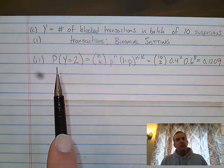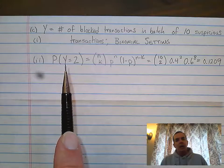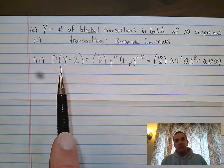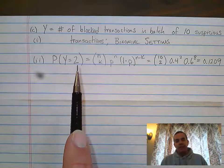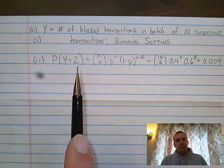Now, to write this down, somehow you need to communicate that you're looking at a probability of this random variable equaling two. You could have written it in words. You could have said the probability of finding two blocked transactions out of 10 suspicious, and that would have been fine.